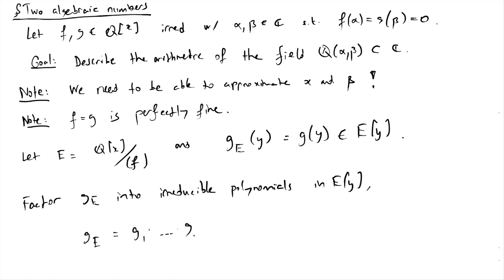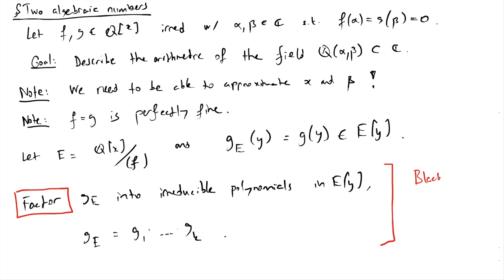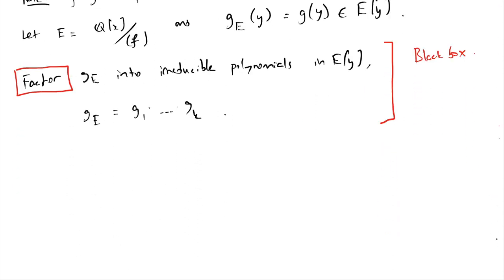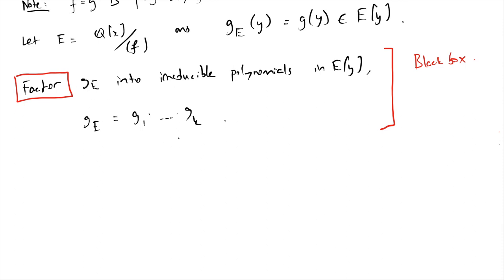Something non-trivial comes next: we're going to factor g in E[y]. g used to be irreducible over Q, but it does not have to be irreducible over E[y]. I need to factor it into irreducibles in this polynomial ring. Let's write g1 through gk for the irreducible factors. I have to leave this as a black box for now. It turns out that factoring polynomials over abstract number fields is perfectly doable — you can do reduction modulo a prime p, and modulo p there are finitely many irreducibles, so it's easy to find them. You can then lift those factors back up to Q if the prime is large enough.